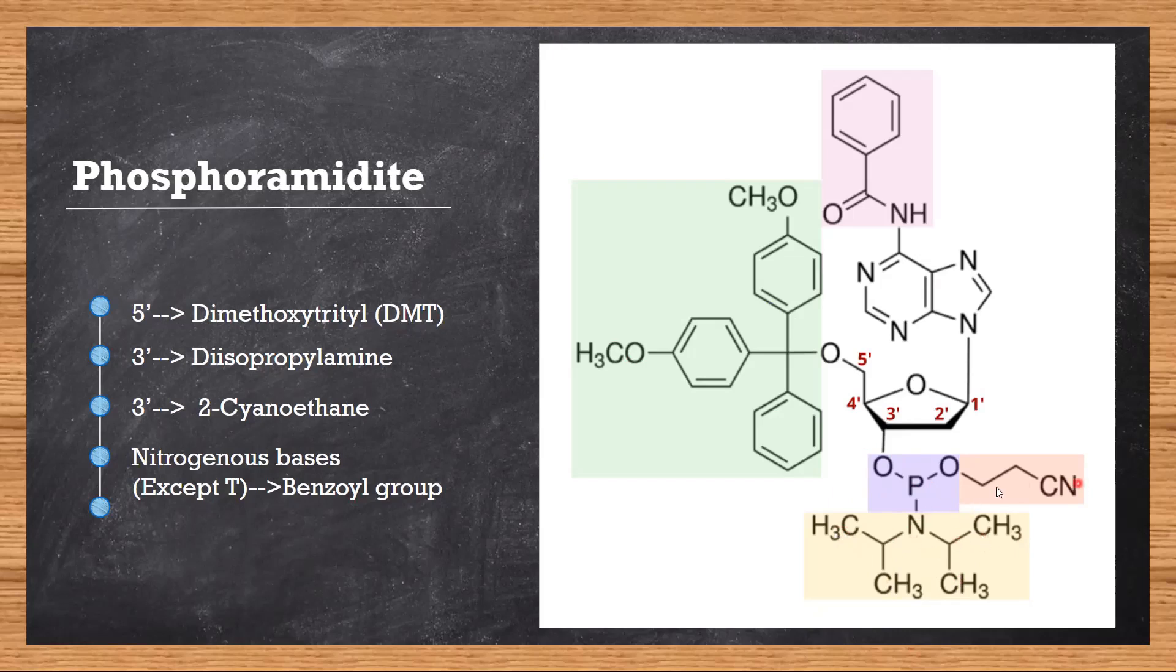At the 5 prime position where the phosphates would attach, we have a group called DMT, dimethoxytrityl. At the 5 prime DMT, 3 prime diisopropylamine and cyanoethane, and to the nitrogenous bases the benzoyl group. All of these together make our phosphoramidite molecule.